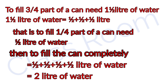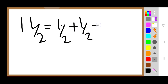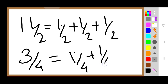1/2 liter of water. 1/2 liter plus 1/3 liter. 1/4 plus 1/4 and 3/4. Half plus half equals 1 liter of water. 3/4 is made of 1/4 plus 1/4 plus 1/4.